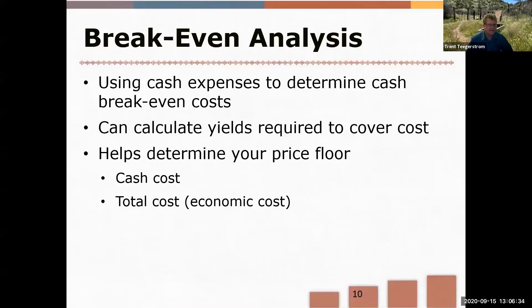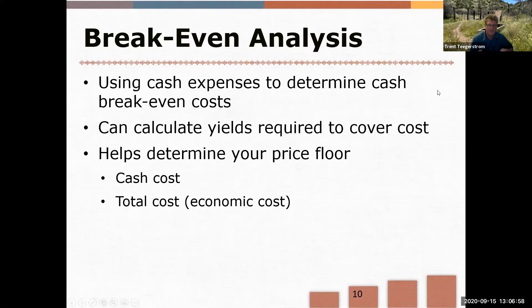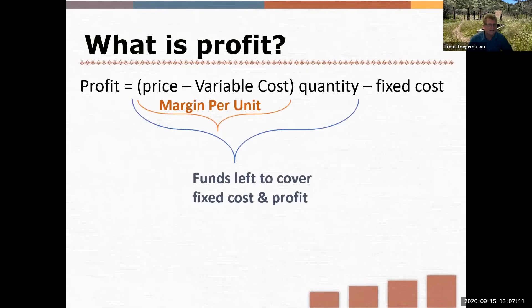Break-even analysis uses cash expenses to determine the cash break-even cost. You can also look at total cost from the economic side, including fixed costs. There are a couple of break-even numbers you can calculate: the yield required to cover costs, or the price per pound of beef produced to cover costs. The units can vary — just make sure you're consistent when looking at them.